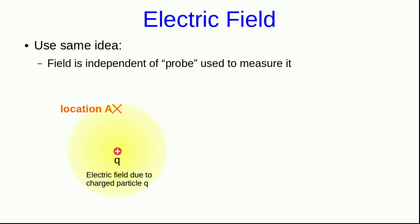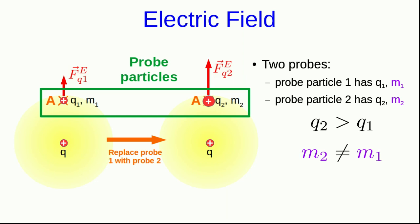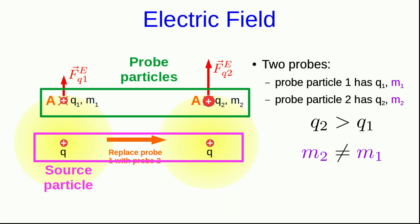The field is going to be independent of the probe used to measure it. So let's think about some charged particle Q. And we think that space is filled with some electric field around Q. Let's think about a location A. Of course, this field exists everywhere, but let's focus on a single location A. And we'll think of putting a probe particle there with some charge Q1 and some inertia M1. Then if we replace that probe one with a probe two, which has a larger charge say, and it doesn't have to have a larger inertia, but definitely a different inertia, we will use this to think about how we obtain an electric field.